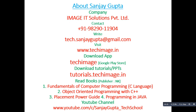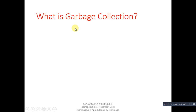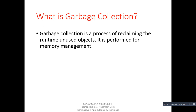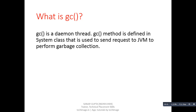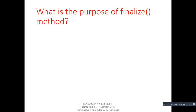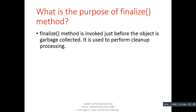First question: what is garbage collection? Answer: Garbage collection is a process of reclaiming the runtime unused objects. It is performed for memory management. Next question: what is the GC method? Answer: GC is a daemon thread. The GC method is defined in the System class and is used to send a request to JVM to perform garbage collection.